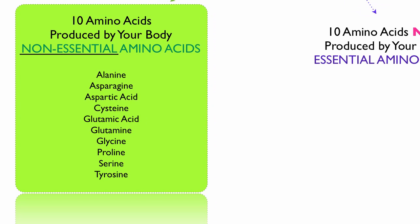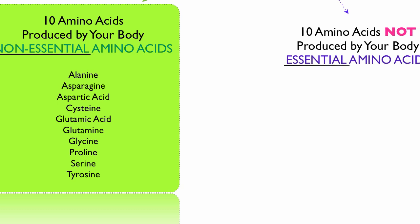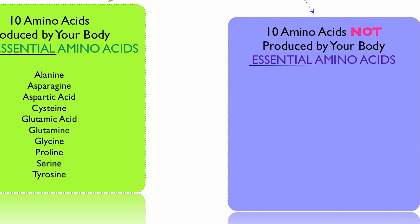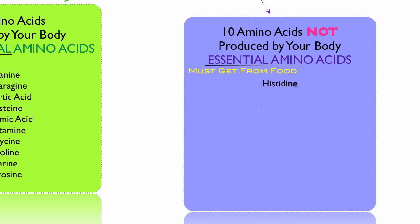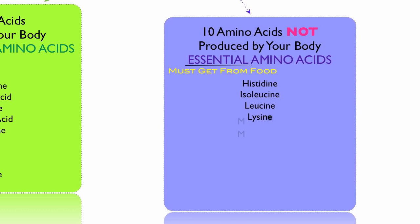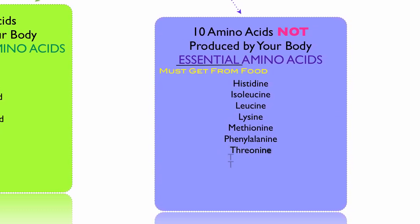The essential amino acids are the ten amino acids not produced by your body, so it's essential that you must get them from food. These are histidine, isoleucine, leucine, lysine, methionine, phenylalanine, threonine, tryptophan, valine, and arginine.